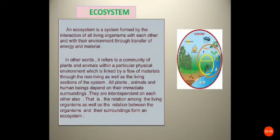An ecosystem is a system formed by the interactions of all living organisms with each other and with their environment, through the transfer of energy and material. In other words, it refers to a community of plants and animals within a particular physical environment, linked by a flow of materials through the non-living as well as the living section of the system. All plants, animals, and human beings depend on their immediate surroundings and are interdependent on each other.